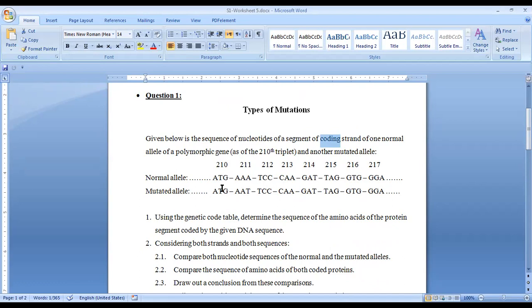Mutated: ATG, they are the same. Okay, this is a part of comparison. They are similar. AAA, where here it's AAT. So here we change one of the nucleotides. A is substituted by T. TCC, TCC. CAA, CAA. GAT, GAT. TAG, also TAG. GTG, also GGG. And GGA, also GGA.